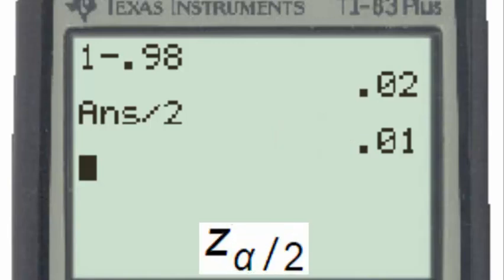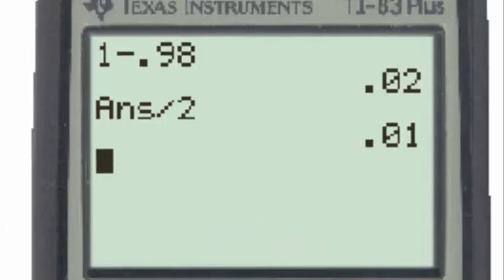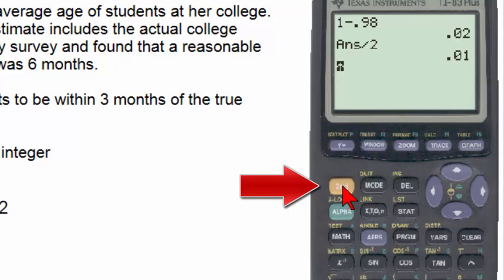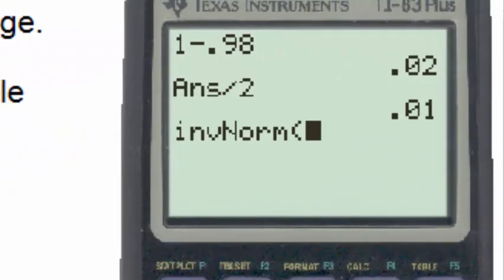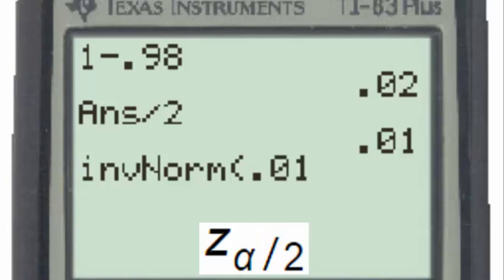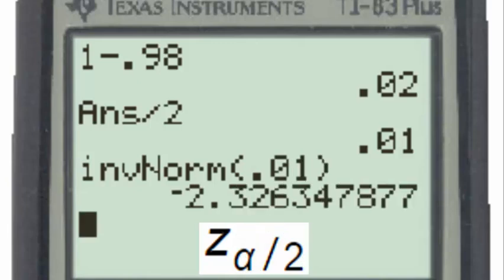To find the z subscript alpha divided by 2, we will use the 0.01 as an input into the inverse normal function. Going to 2nd distribution and selecting number 3, the inverse normal function, we'll put in 0.01 as an input. When we hit enter, we see we get a negative number. We'll take the positive 2.33 as the z subscript alpha divided by 2.